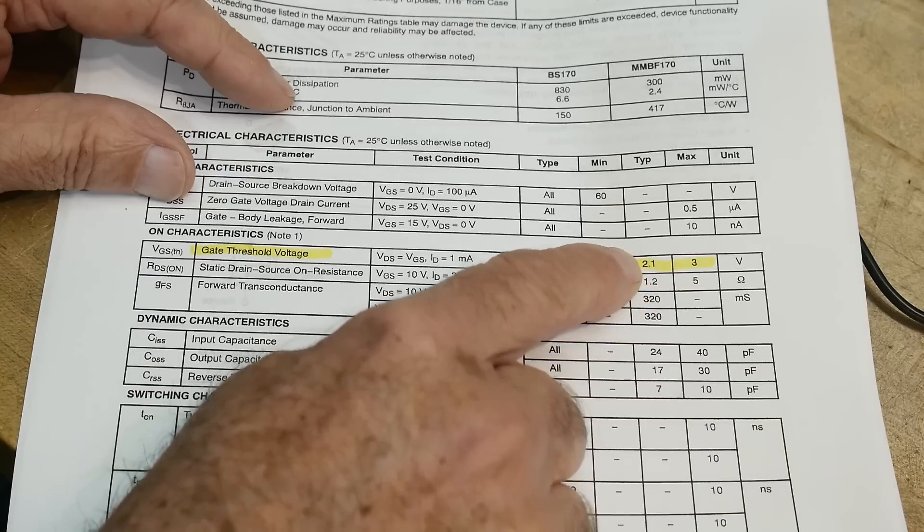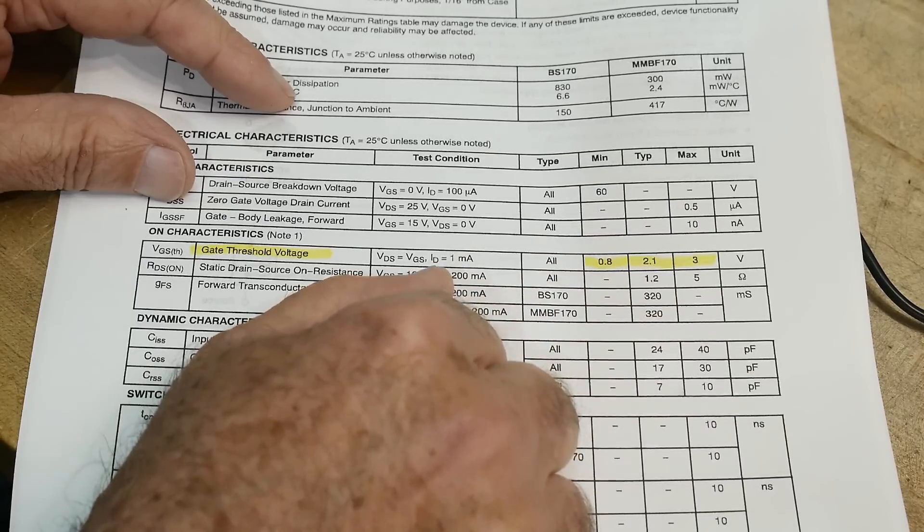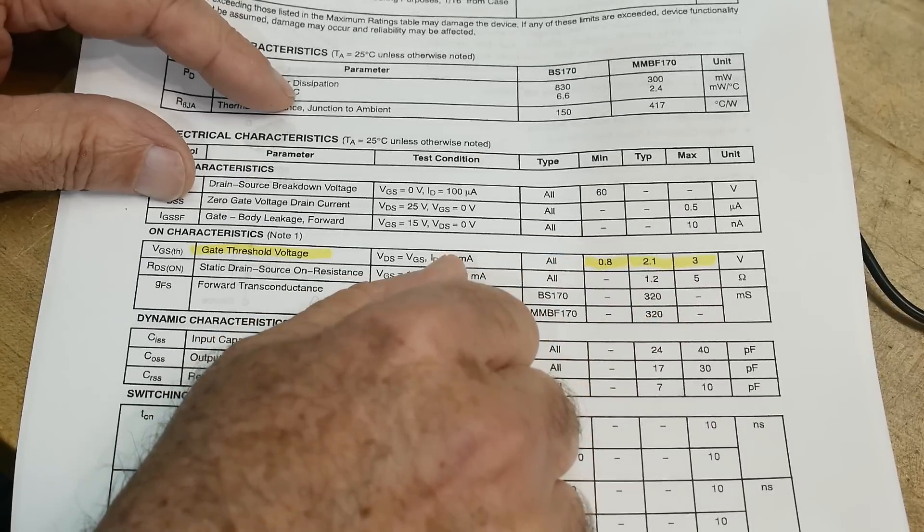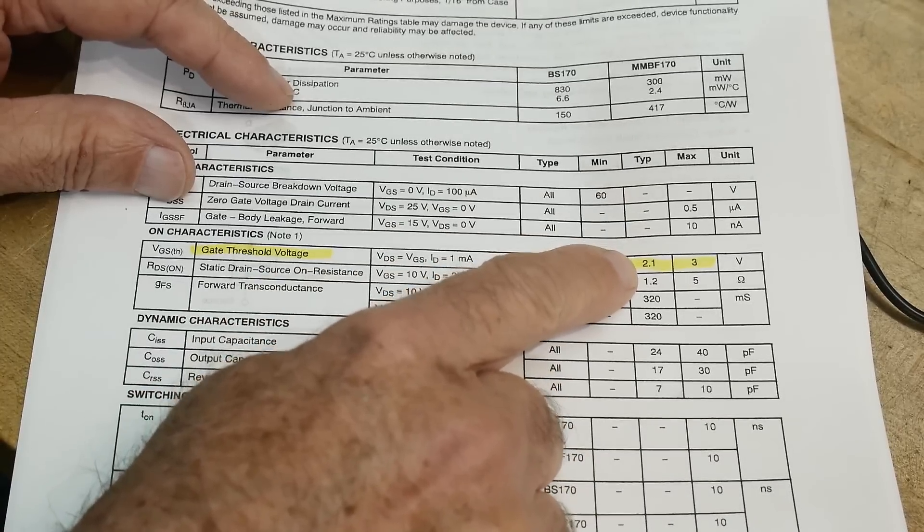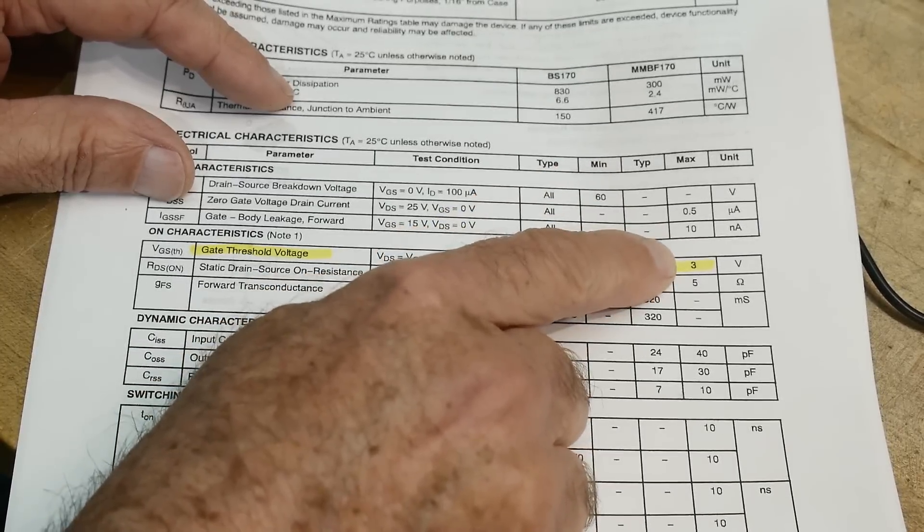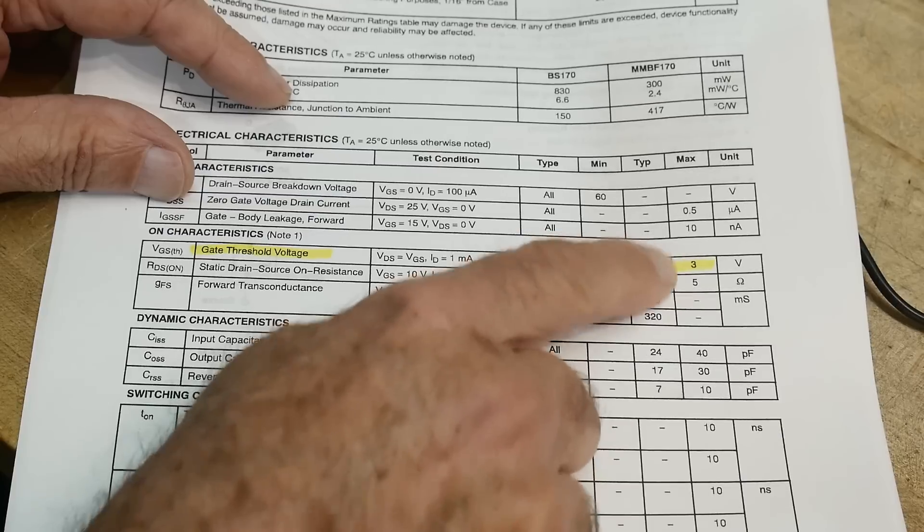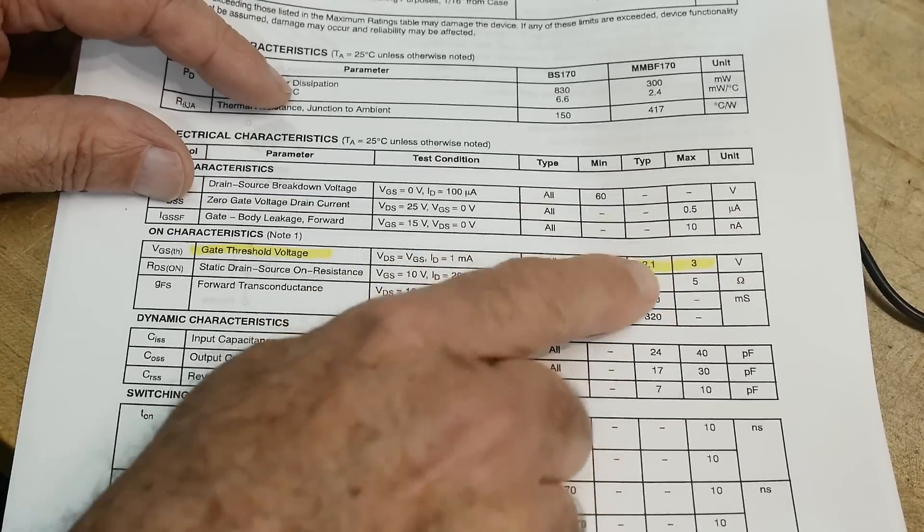Well, we only have 2.6 volts and the thing won't start to turn on. It will not work very well. So if we get typical transistors, it's going to work. But if we get the far end of the spectrum, 3 volt devices, it's not going to work very well.